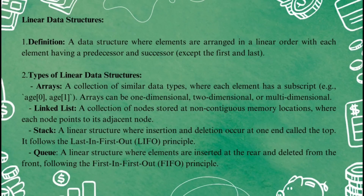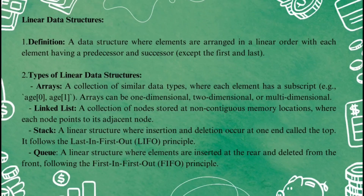Arrays: a collection of items that are all of the same type, like a list of ages. You can think of an array like a row of lockers where each locker has a number and stores one item. Arrays can be one-dimensional, like a single row of lockers, or even two-dimensional and multi-dimensional, like lockers arranged in rows and columns. Linked list: unlike arrays where data is stored in a fixed order, a linked list is made of nodes where each node stores data and points to the next node in the list. The nodes don't have to be next to each other in memory — they can be scattered anywhere, and each node knows where the next one is.